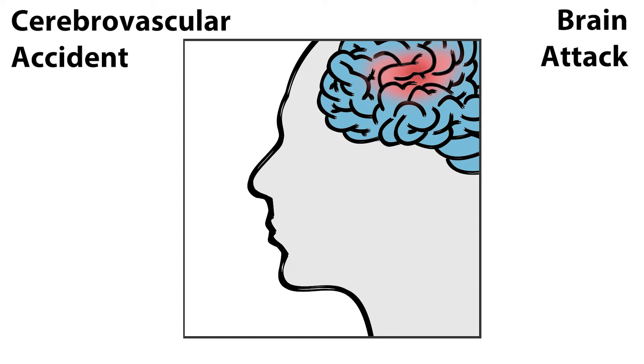As with a heart attack, the most common form of brain attack occurs when a blood vessel in the brain becomes clogged, cutting off the oxygen to the brain, resulting in death of brain cells.